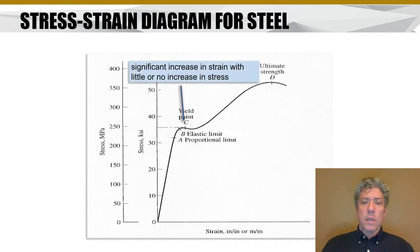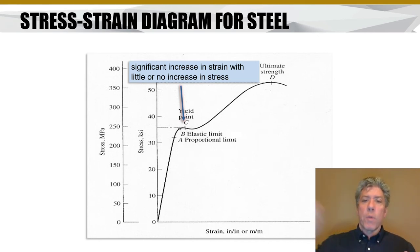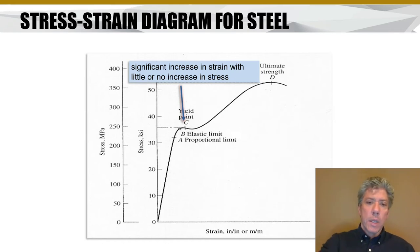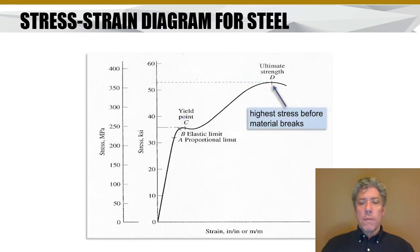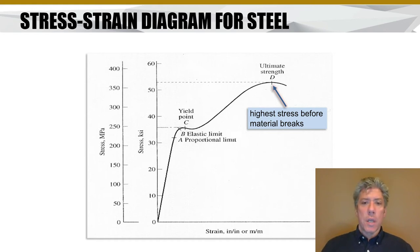Point C is called the yield point. This is essentially the point where there's no significant increase in stress for an increase in strain — it stretches and stretches at essentially constant force. That's known as the yield point. Another point of interest on our curve is the maximum strength of the material, the ultimate strength — the highest stress before the material finally fractures and fails.